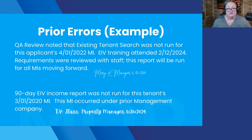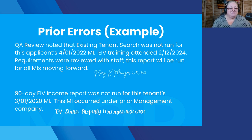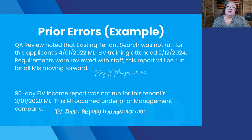Here are a couple of examples. First: 'Owner-agent review noted that the existing tenant search was not run for this applicant's move-in. We attended EIV training on a particular date, reviewed requirements with staff, and moving forward this will be run for everybody — signed and dated.' Another example for a 90-day EIV report: 'This report wasn't run for this tenant's move-in. This move-in occurred under a prior management company — signed and dated.' As noted, in some cases that's going to mitigate or temper that finding because you've already noted it, addressed it, and corrected it.